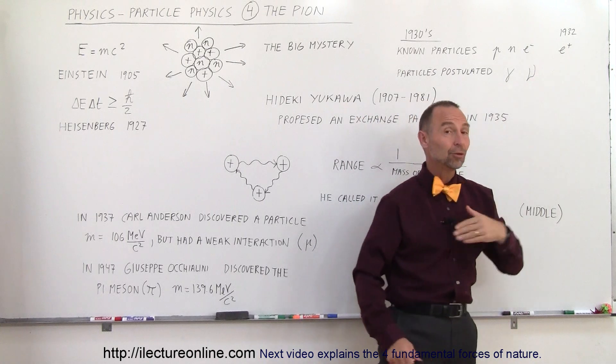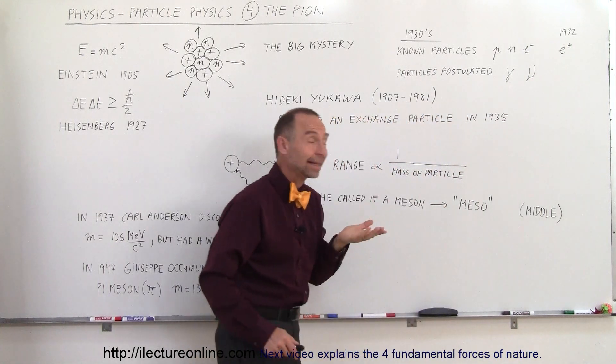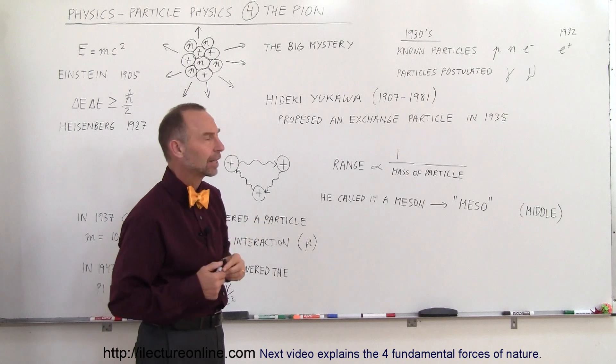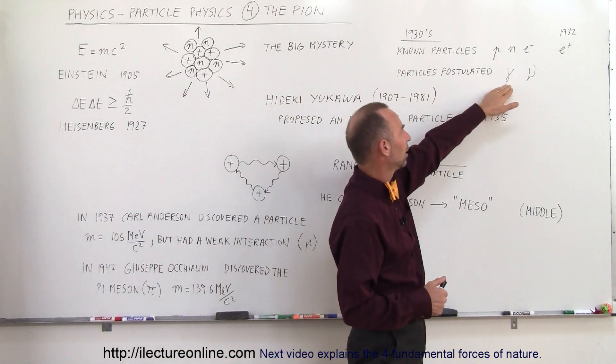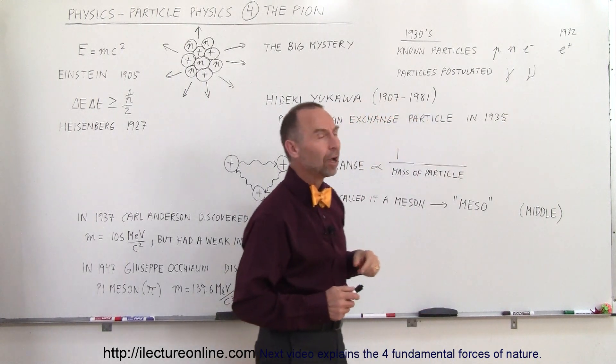We also had discovered in 1932 there were such things as anti-electrons or positrons, the antiparticle of the electron. Now, also we postulated that there were such things as neutrinos and such things as photons.